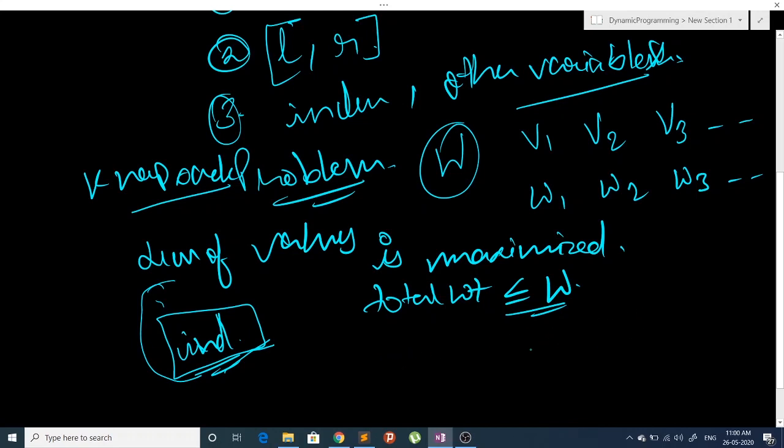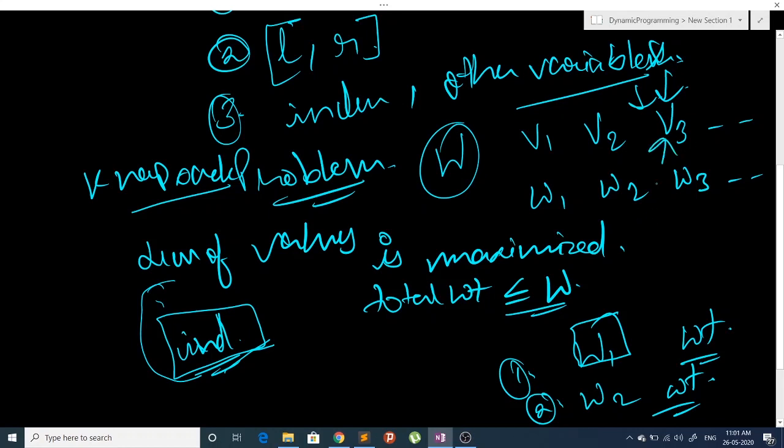So let's say we are on the third index. Now in case one we have W1 weight total till now, and in the second case we have W2. So in the first case we come to index 3 with a total weight of W1, and in the second case we come to third index with total weight of W2.